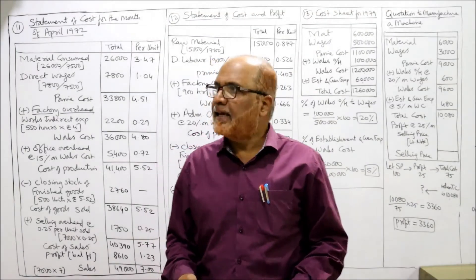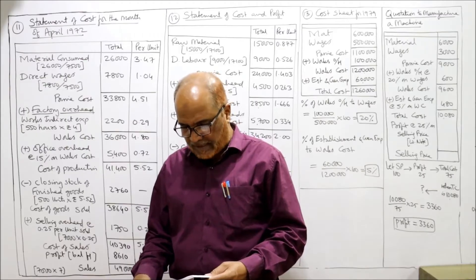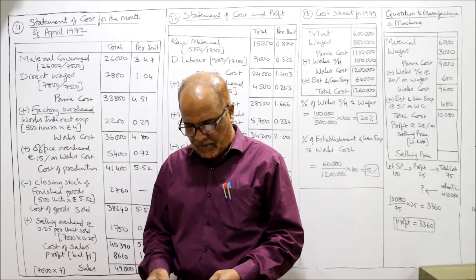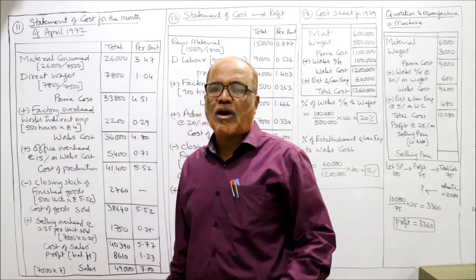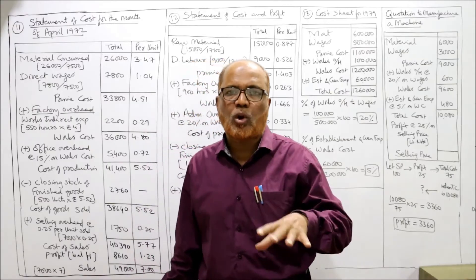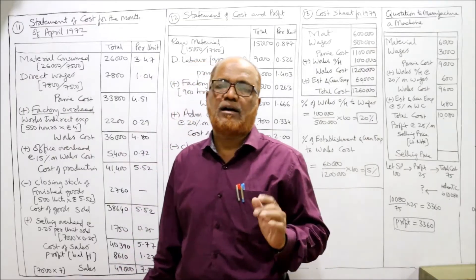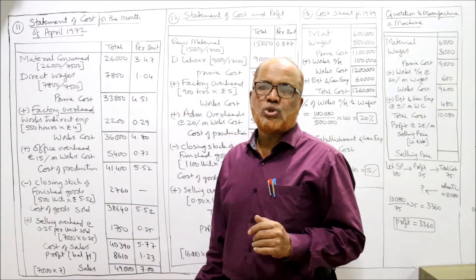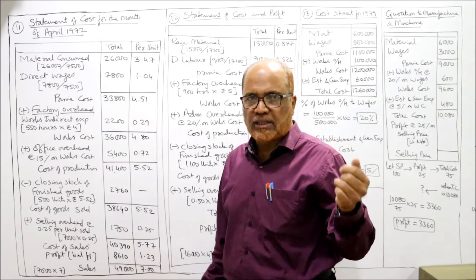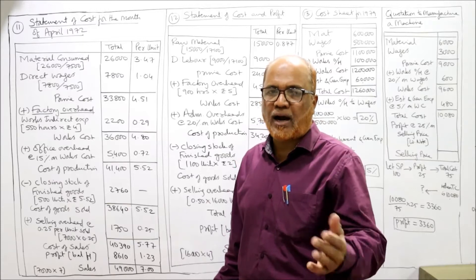We will now start problem number 11. For the first 10 problems we covered cost sheet, unit and output costing. From problem 11 onwards, each problem will be different, so give more concentration. If you have not taken the problems, please go to the description — you'll find a link at the last line to get a hard copy of the problems.